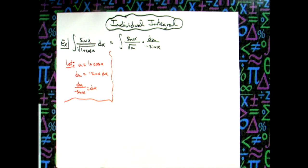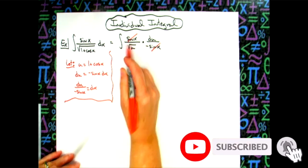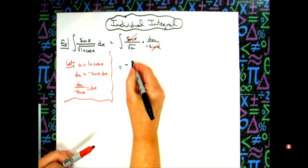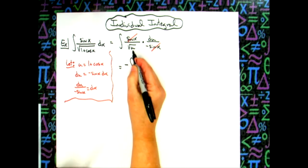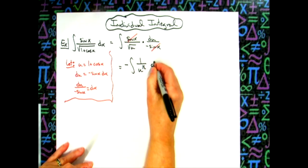That's going to let us cross the sine x's out. We will still have that negative that we're going to have to bring out in front. So we'll have negative integral of 1 over—I'm going to go ahead and take that radical u and make it u to the 1 half power—and then we'll have du.